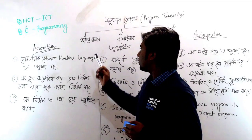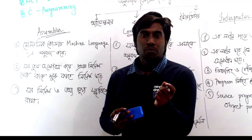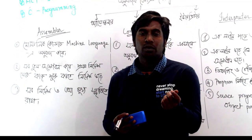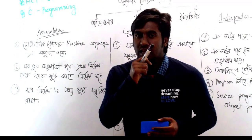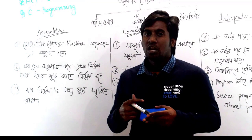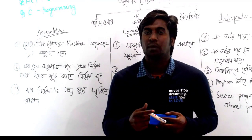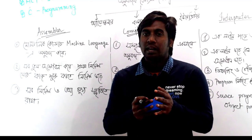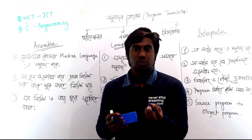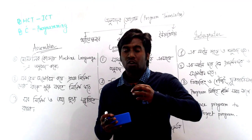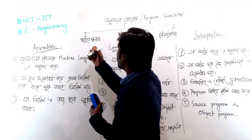The assembler converts assembly language code into machine language. Assembly language uses a form of mnemonic code. The assembler takes the assembly language and converts it to machine language — a similar process of translation.